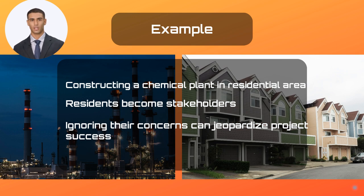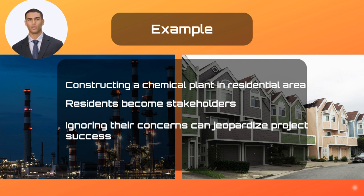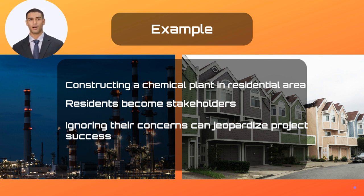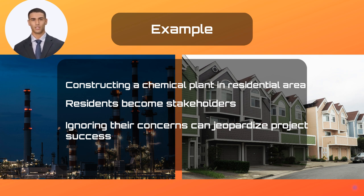For example, imagine building a chemical plant in a residential area. The residents become stakeholders due to the project's impact on their lives. If we ignore them, they might organize and affect the plan for this project, and might even be able to stop it if they can consolidate their support.